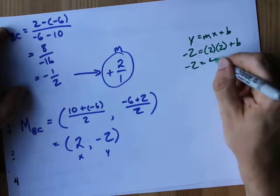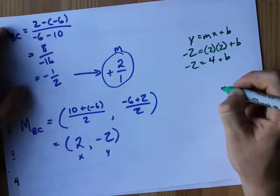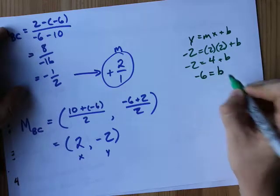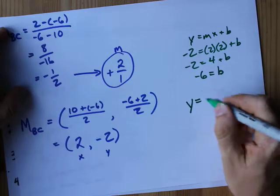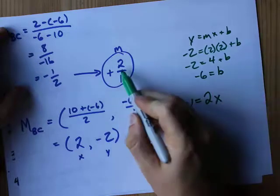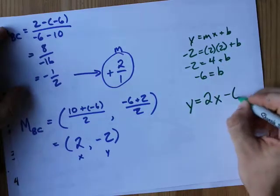Negative 2 equals 2 times 2 plus b. That's 4. Move 4 to the other side. I get negative 6 is b. And so the equation of my right bisector is y equals 2x, that's this slope, 2x minus 6.